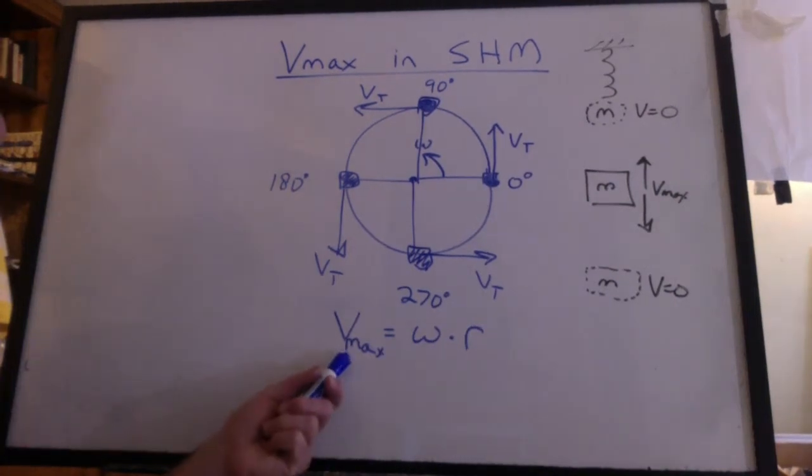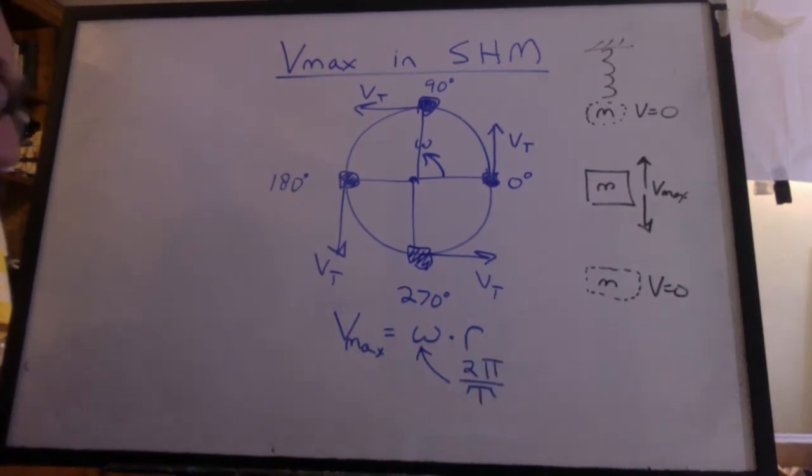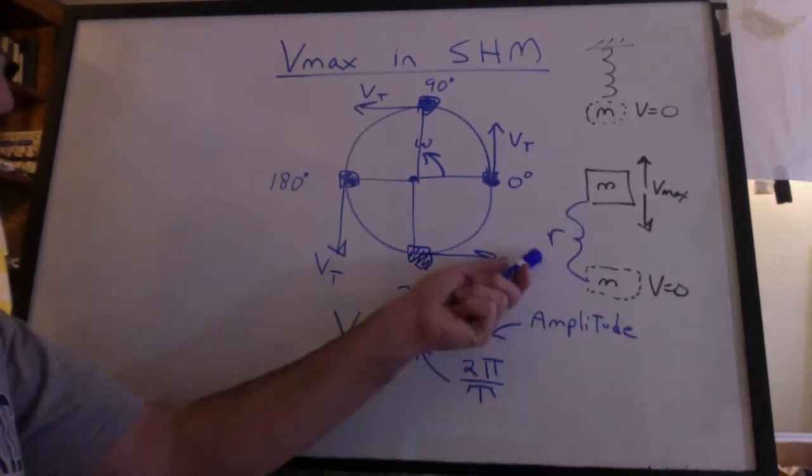So this is how we get the velocity maximum. What's omega? Two pi over the period. What's r? That's the amplitude. It's the maximum displacement from the equilibrium position.